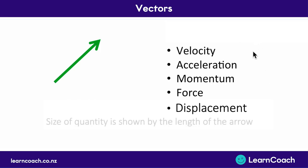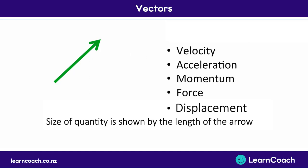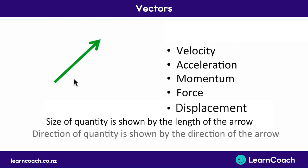The first thing you need to know is that the size of the quantity is shown by the length of an arrow, because we're going to represent all of these vectors by arrows. A bigger vector — a big velocity or big acceleration — means a big arrow. A small momentum or small force means a small arrow. In the same way, the direction of the quantity, so the direction of the force or velocity, is shown by the direction of the arrow.